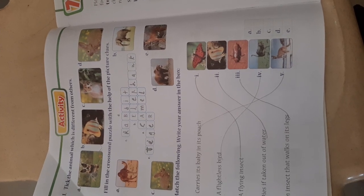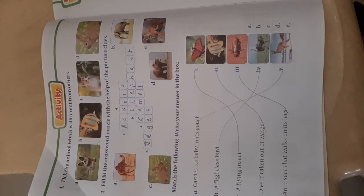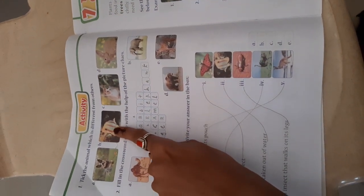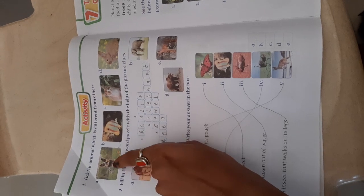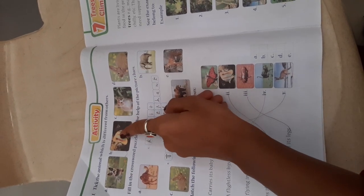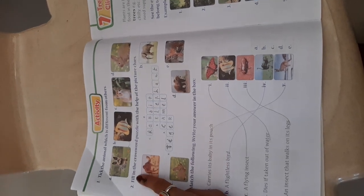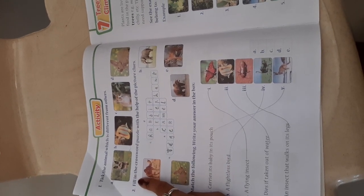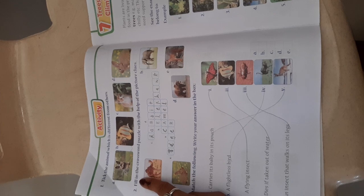You can see the different one is fish. It is the only water animal. Dog, cat, rabbit, and fish - fish is different. Now Activity B is filling the crossword puzzle with the help of picture clues.